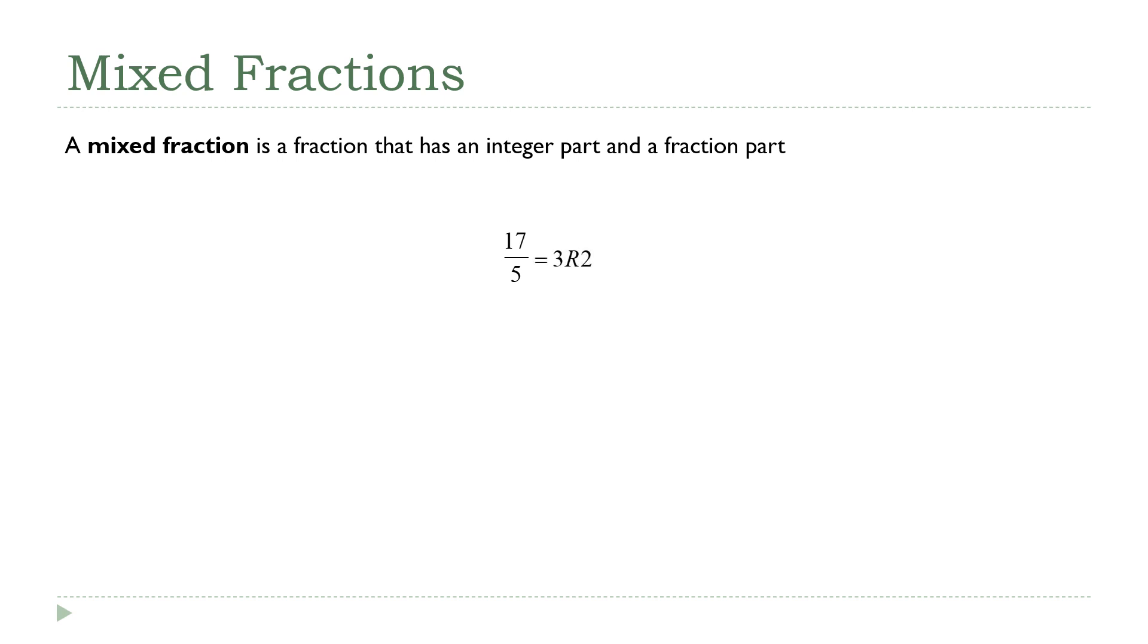Those numbers give me the two parts of my mixed fraction. The whole number part is 3, so the 3 goes out in front. The remainder becomes the new numerator. Just as we saw in the previous example, the denominator stays the same. So 17 fifths converts back into 3 and 2 fifths.